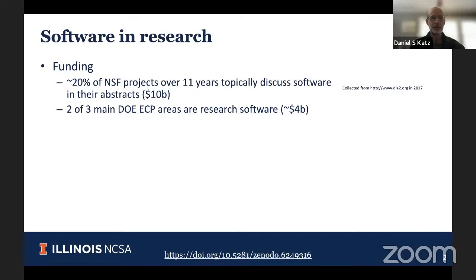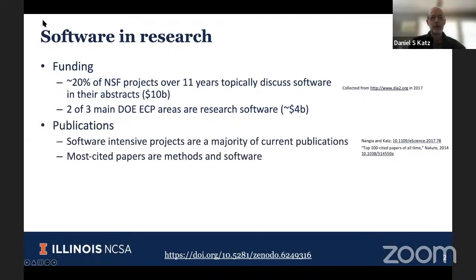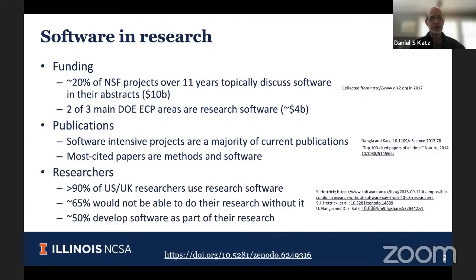We can also look at publications. Software-intensive projects are a majority of current publications across fields, and the most cited papers are typically either methods papers or software papers. We've done surveys of researchers in the US and the UK and found that more than 90% use research software as part of their research. About 65% wouldn't be able to do their research without that software, and about 50% develop software as part of their research. So software is important — essential in a lot of research.